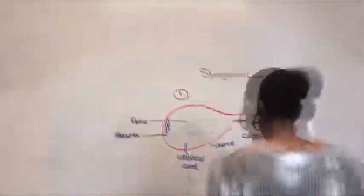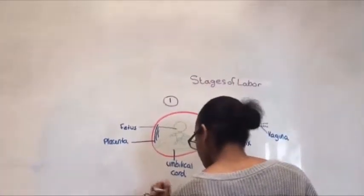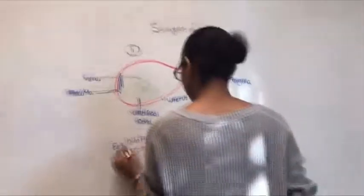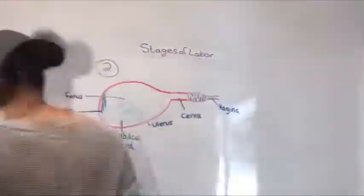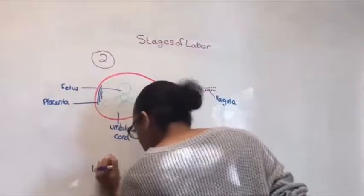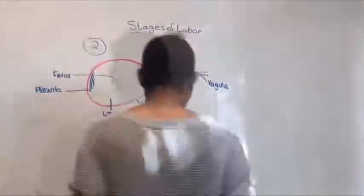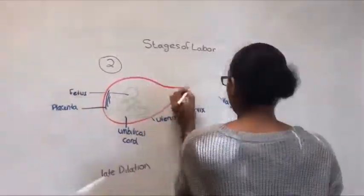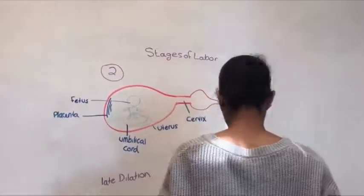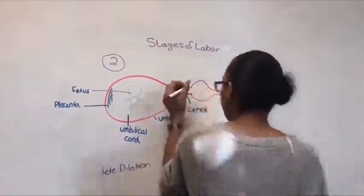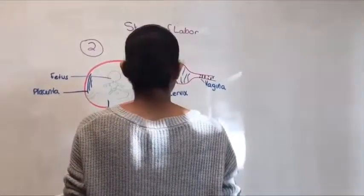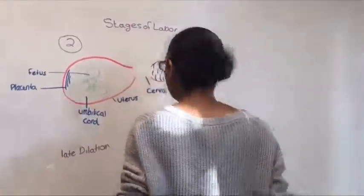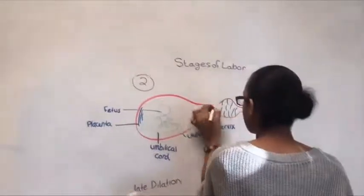There are three sub-phases within stage one: the latent, active, and transition phase. During the latent phase, contractions increase strength and frequency. The active phase is when the infant's head enters the pelvis. And the transition phase is when the baby's head rotates, allowing it to navigate the narrow dimensions of the pelvis.